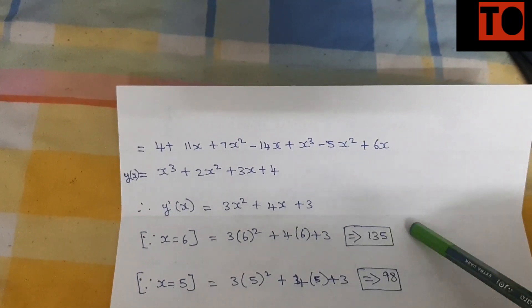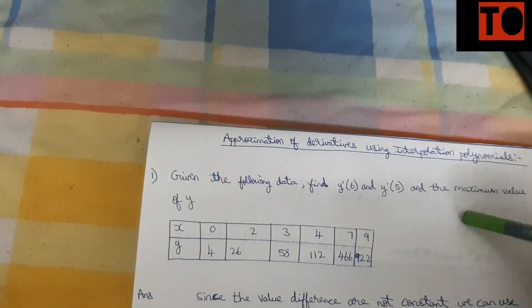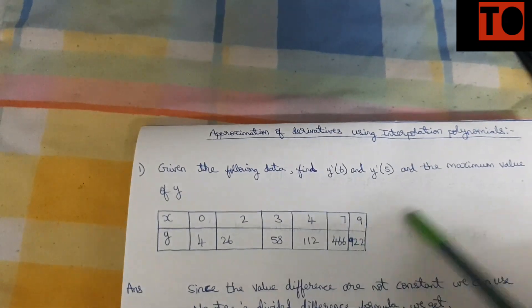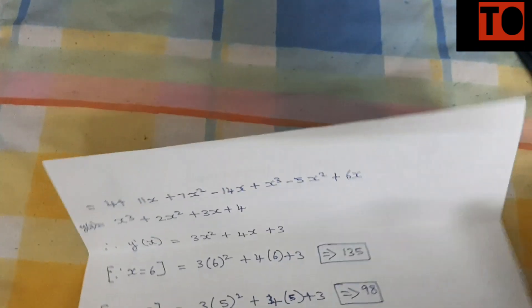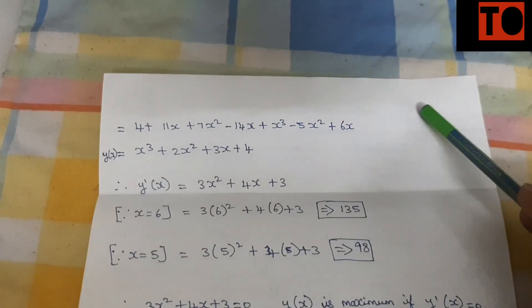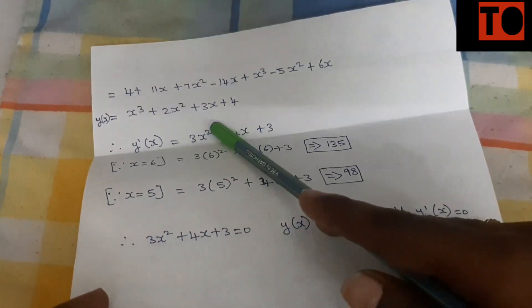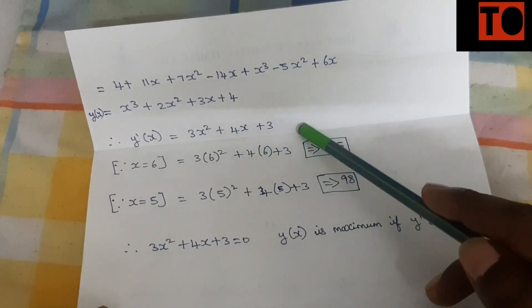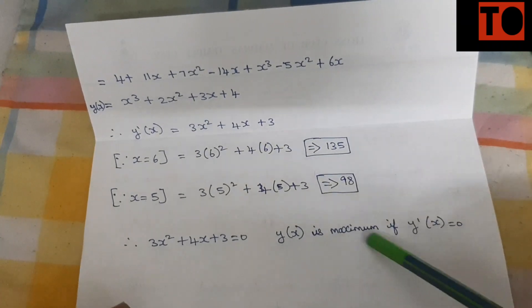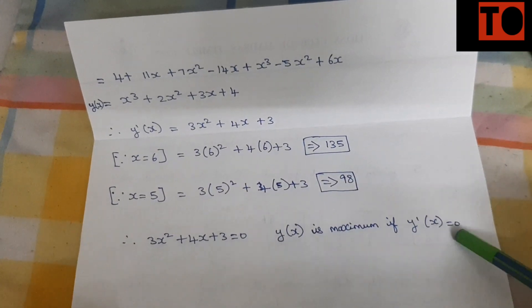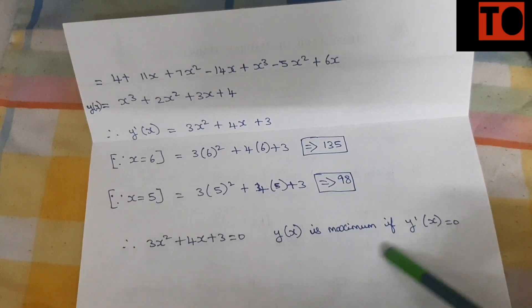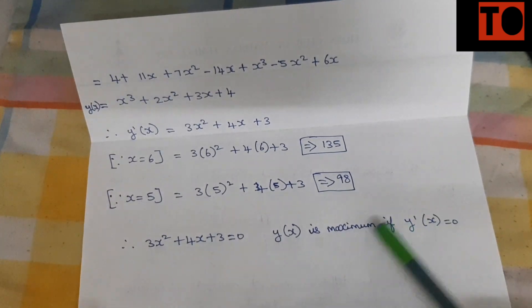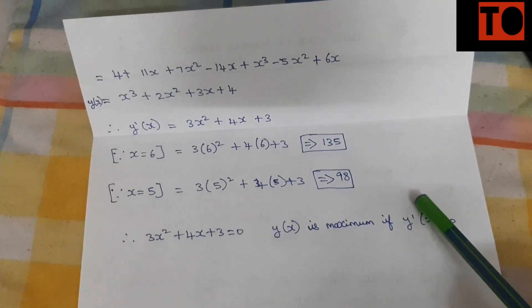This gives us the answer for y. The question also asks to find the maximum value of y. To find the maximum, set y' equal to zero: 3x squared plus 4x plus 3 equals 0. When y' equals zero, y is at its maximum. Solving this gives the answer.